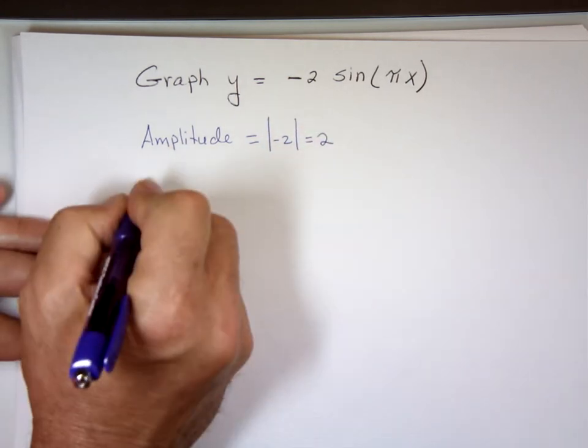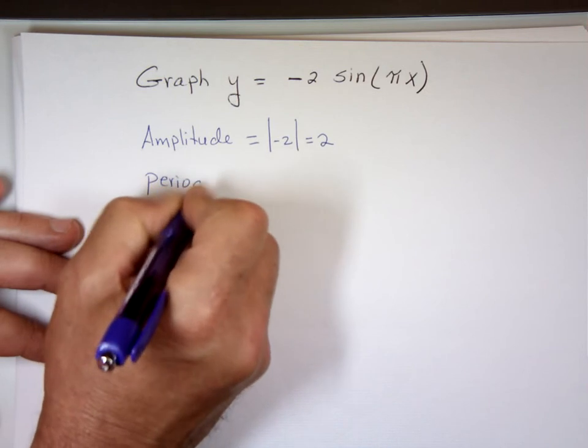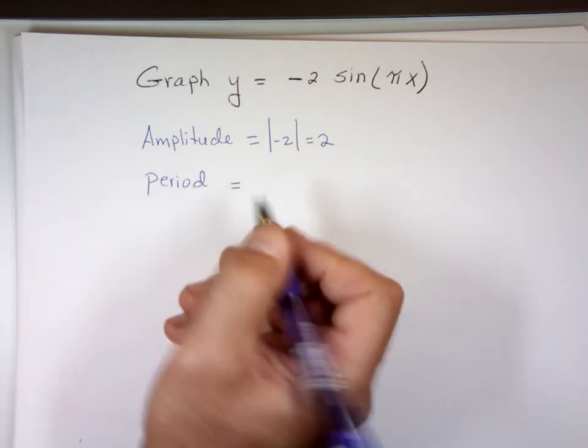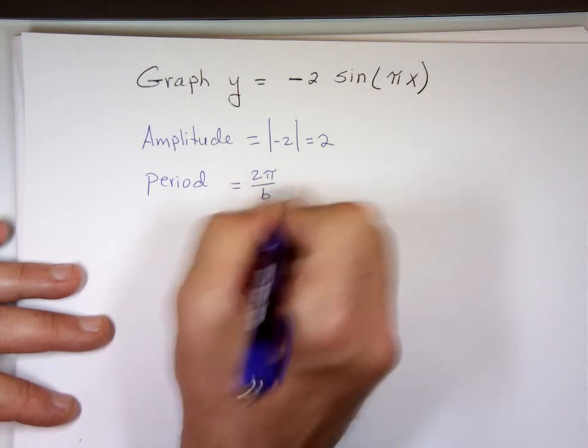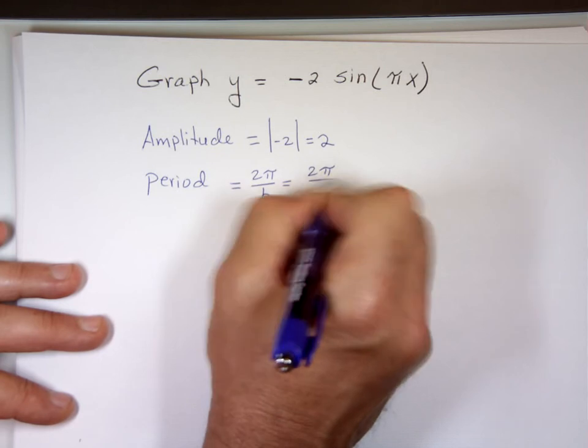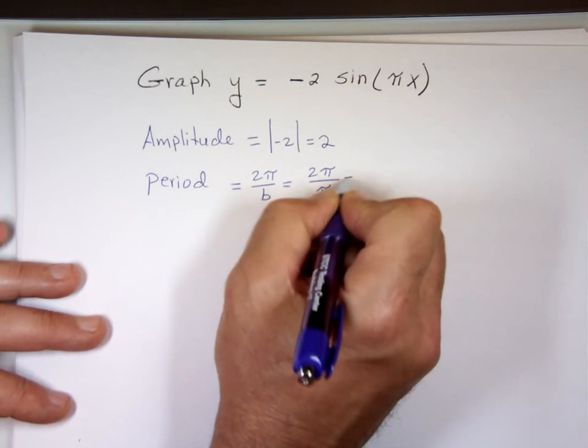My period is going to be 2 pi divided by b. What is b here? Pi. Which is 2.